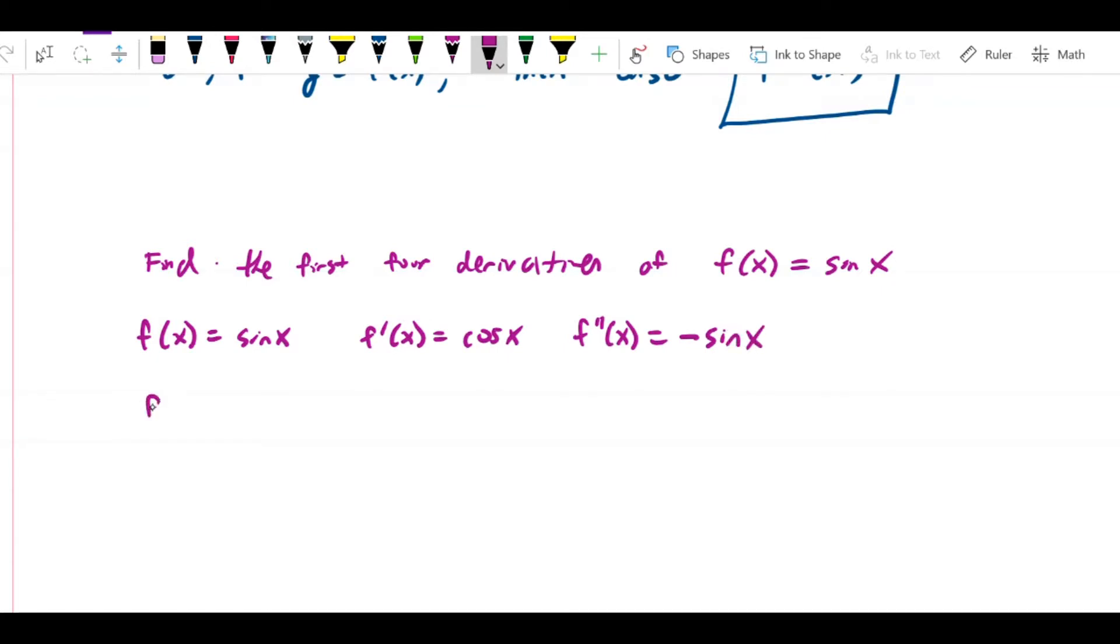f''(x) = -sin(x). f'''(x) is going to be the derivative of f'', so that's negative, and the derivative of sine is cosine, so that's -cos(x). And f^(4)(x), the fourth derivative, is negative times the derivative of cosine x, which is -sin(x), so that's sin(x).